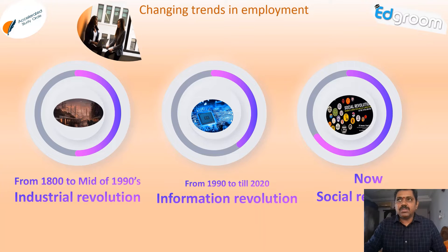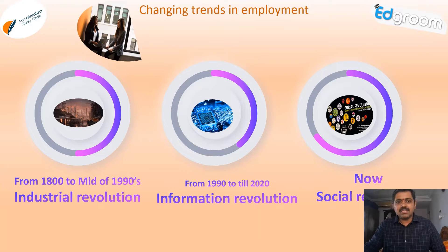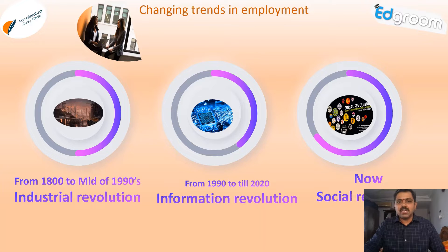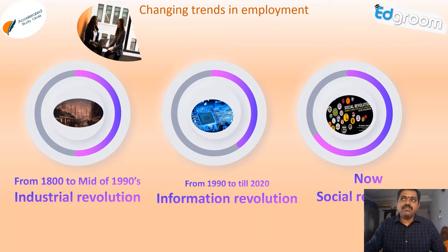In the Industrial Revolution, people were able to make their lives, whereas in the Information Revolution, people are able to make their lives as well as develop comforts like luxury cars, houses, flats, investments — anything. Now in the Social or Digital Revolution, people are not focusing on the comforts of life; they are looking for the quality of life. This is the age of quality, not just comforts or simply making a living.